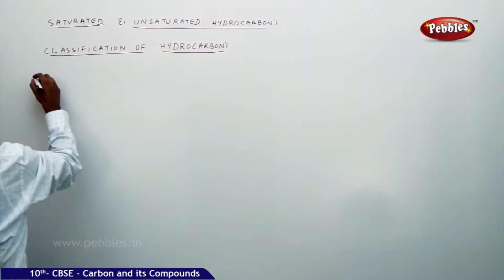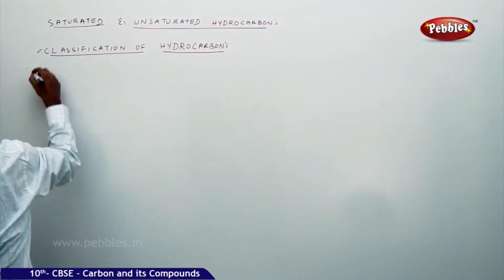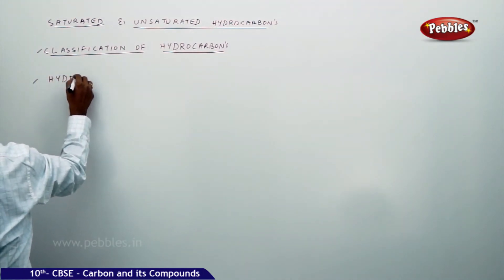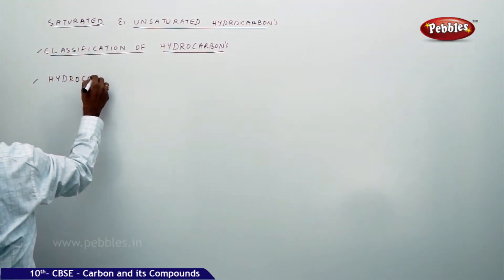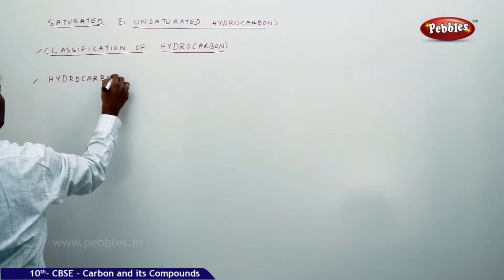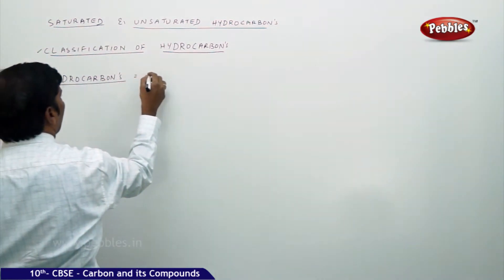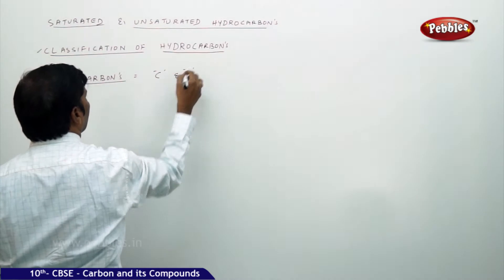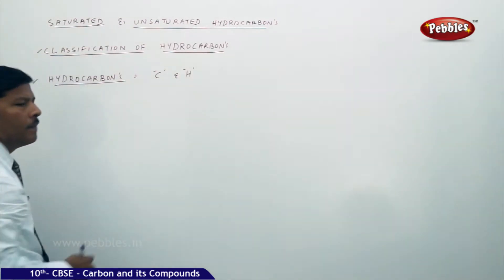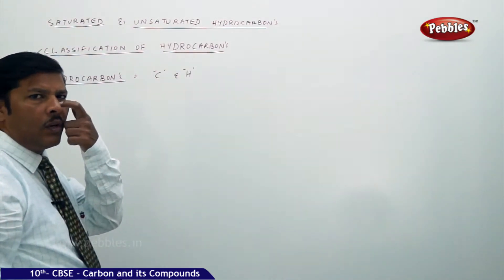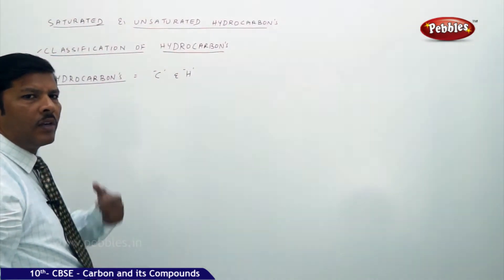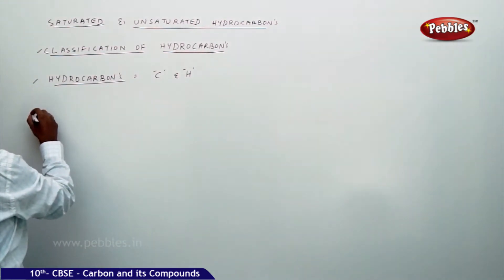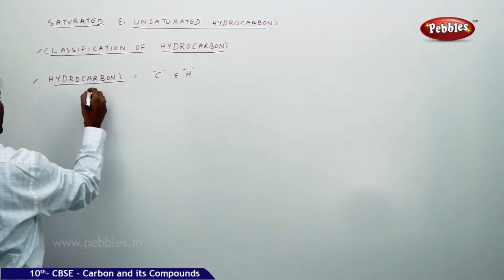If you go for a hydrocarbon, hydrocarbons are made up of carbon and hydrogen — they contain only two elements: carbon and hydrogen. Now let us go for the classification.